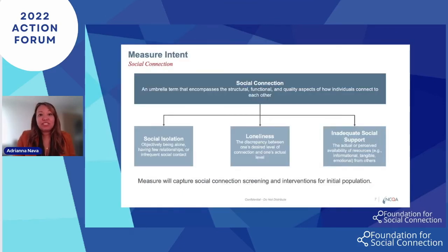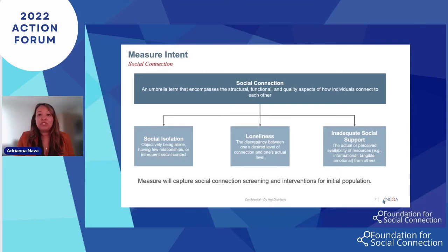To measure social isolation and loneliness, our measure uses the umbrella term of social connection to address three concepts: social isolation, loneliness, and inadequate social support. We know that loneliness and social connection are not interchangeable, since individuals can feel isolated but not alone, and vice versa. But all three constructs are associated with negative health outcomes. Our current proposed measure assesses the percentage of individuals age 65 and older who during the measurement period were screened at least once for social isolation, loneliness, or inadequate social support using a pre-specified instrument. And if they were screened positive, they receive a corresponding intervention.